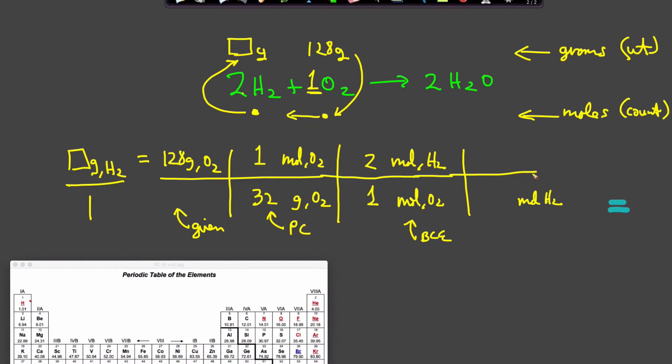Now I need to go from moles of H2 to grams of H2. What's the relationship? Let's look at our periodic chart - one atom weighs 1.01 grams, so one H2 must weigh twice that, or 2.02 grams per mole.